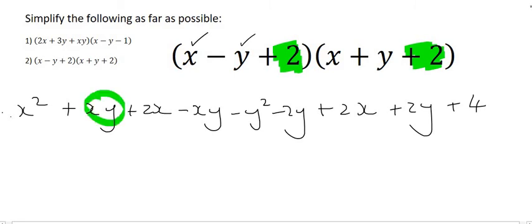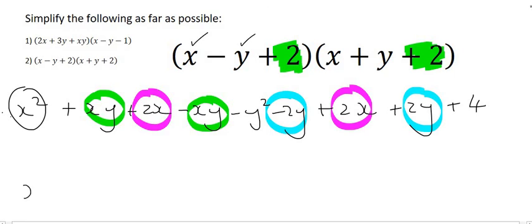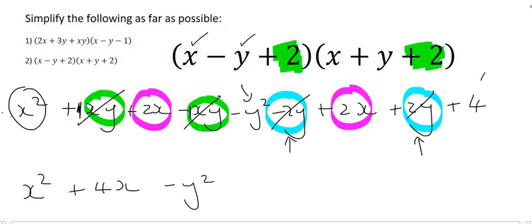Lastly we need to look for any like terms. There's an xy and another xy — those cancel because positive xy minus xy gives 0. There's an x and another x — 2x plus 2x gives 4x. Then there's a minus 2y plus 2y — those cancel out completely. So we'll put x squared, then the xys cancel, then 4x, then the ys cancel, and all that we have left is minus y squared and positive 4.